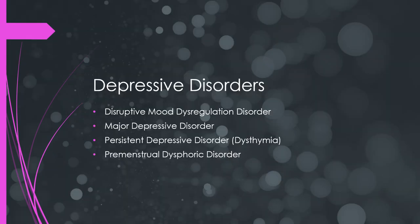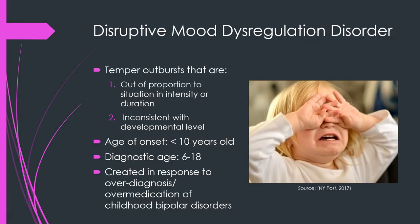The next category is depressive disorders. The first is disruptive mood dysregulation disorder — temper outbursts that are out of proportion to the situation in intensity or duration, inconsistent with developmental level, with onset at least by age 10. It can only be diagnosed after age 18, so it's only for children. It was created in response to over-diagnosis of childhood bipolar disorders.